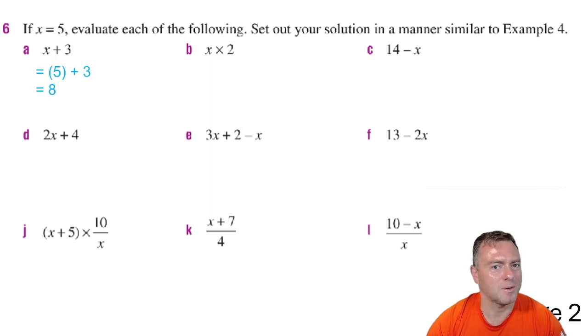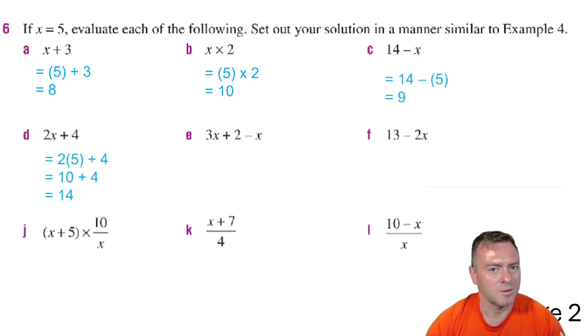So for the first one we do 5 plus 3 which would give you 8. The next one would be 5 times 2 which would give you 10. Next one would be 14 take away 5 which gives you 9. Next one would be 2 times 5 which is 10 plus 4 which gives you 14. The next one would be 3 times 5 plus 2 minus 5.